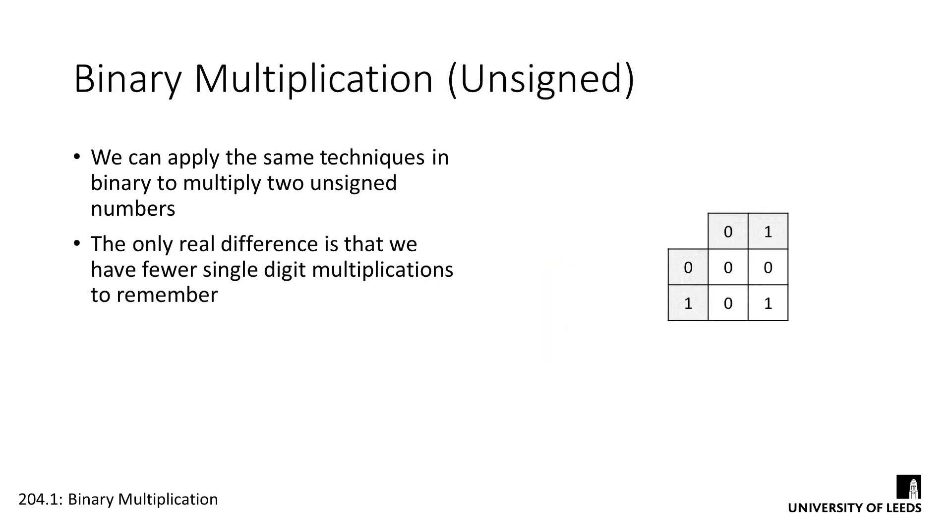When we move over to unsigned binary multiplication, we just apply the same technique. Like in decimal, we need to memorize some single digit times tables. But luckily, our binary times tables are incredibly simple. 0 times 0 is 0, 0 times 1 is 0, and 1 times 1 is 1.